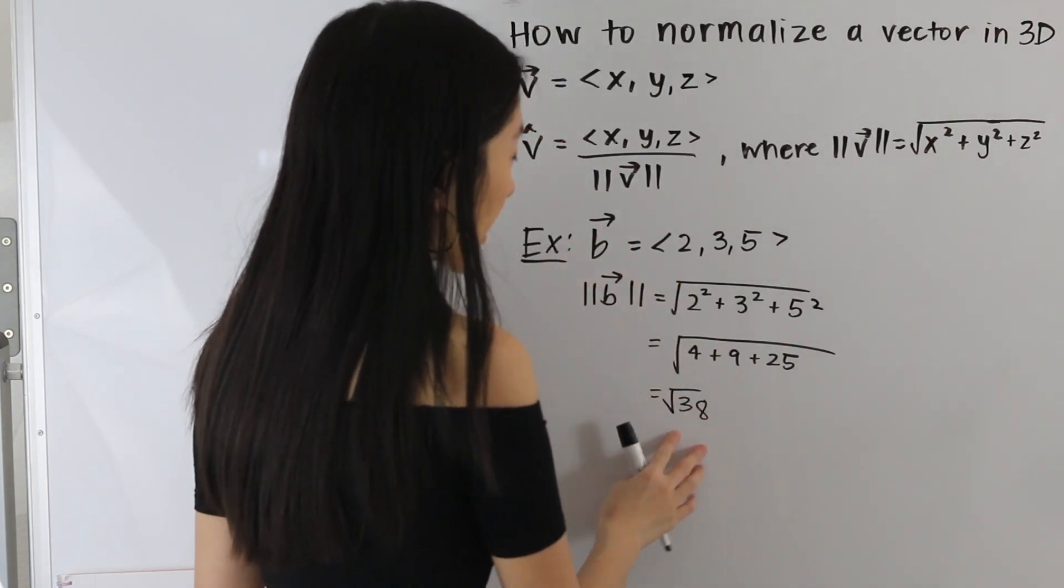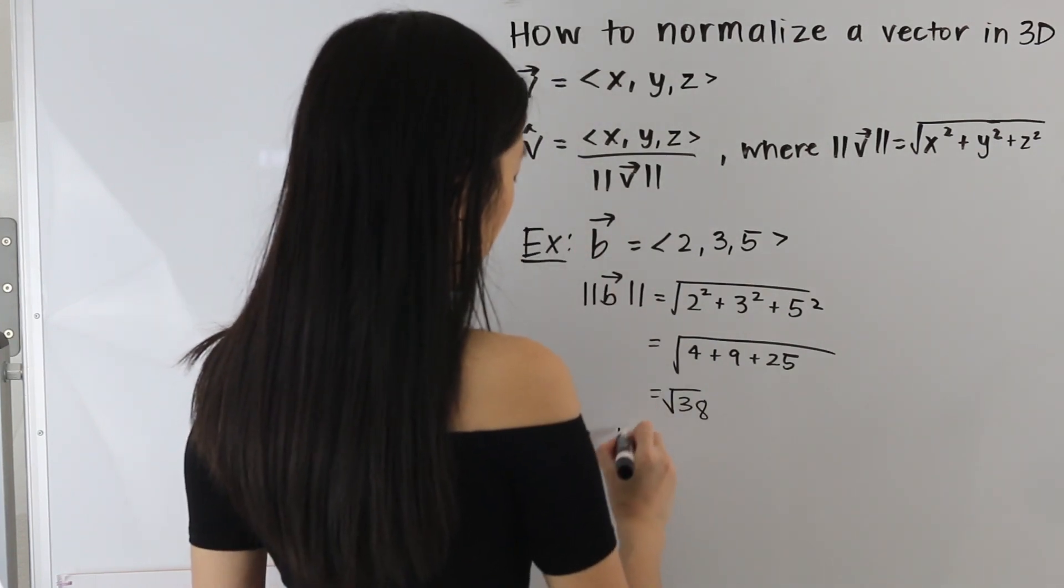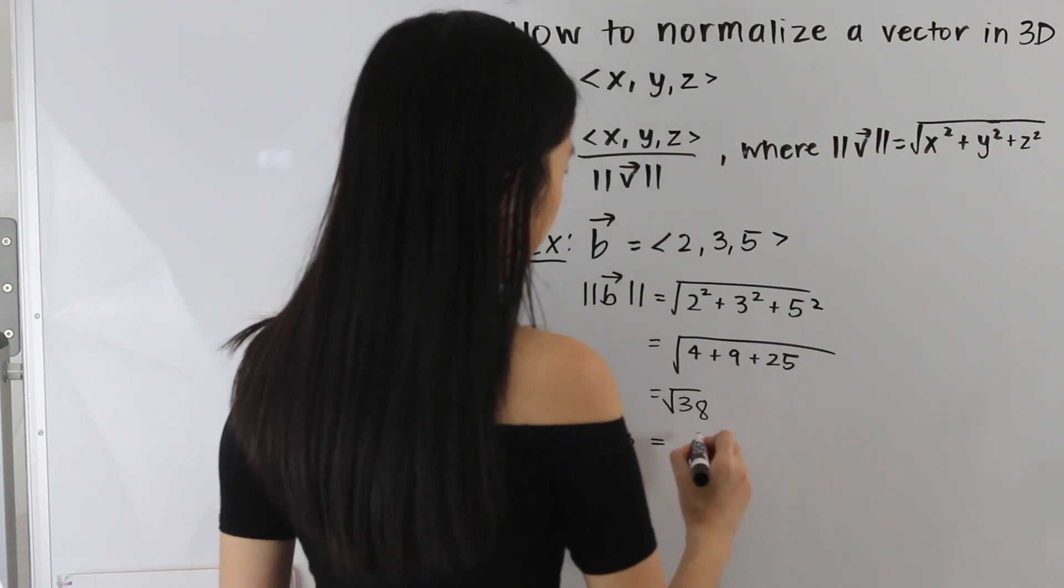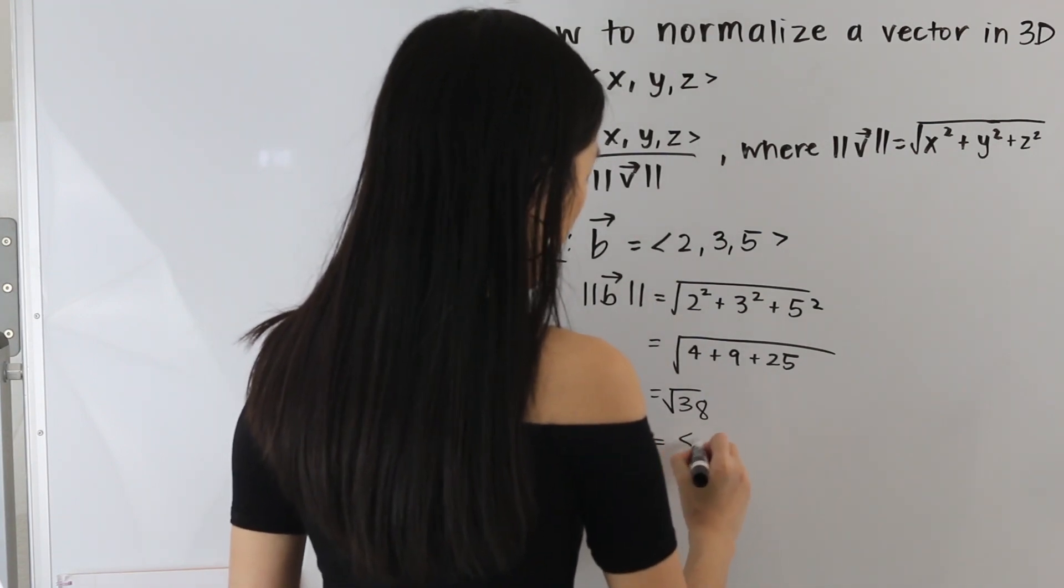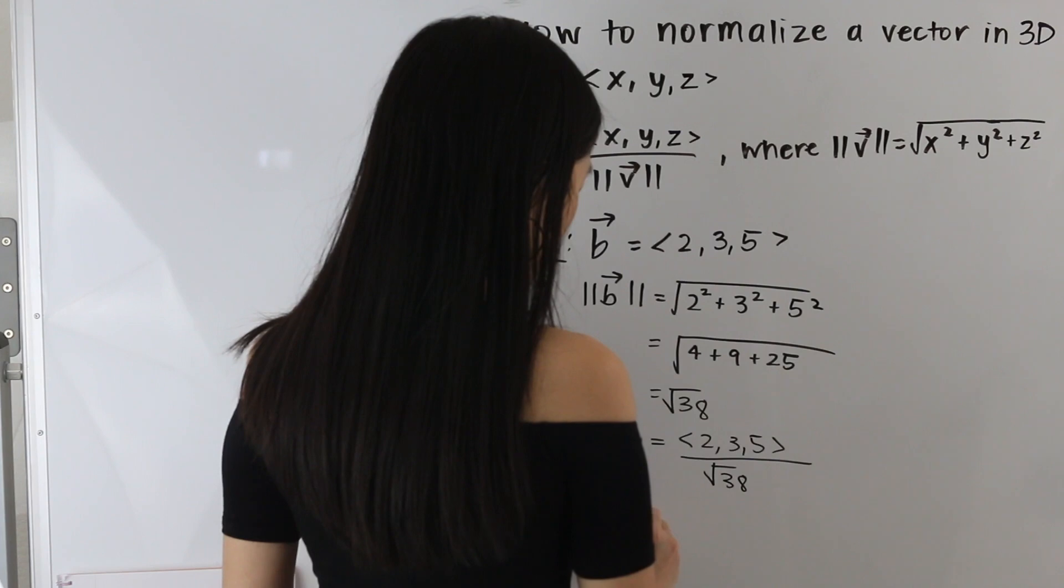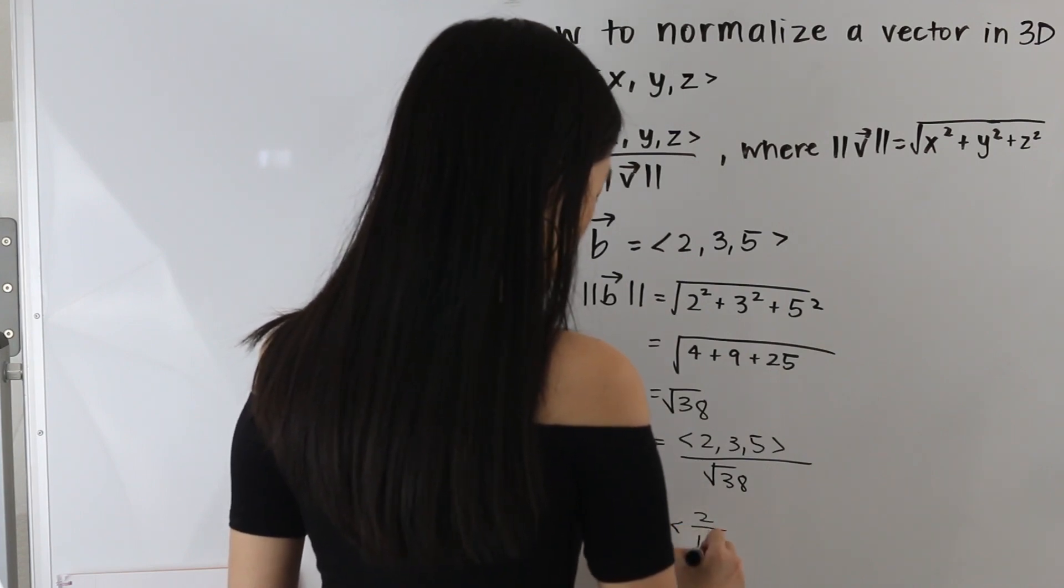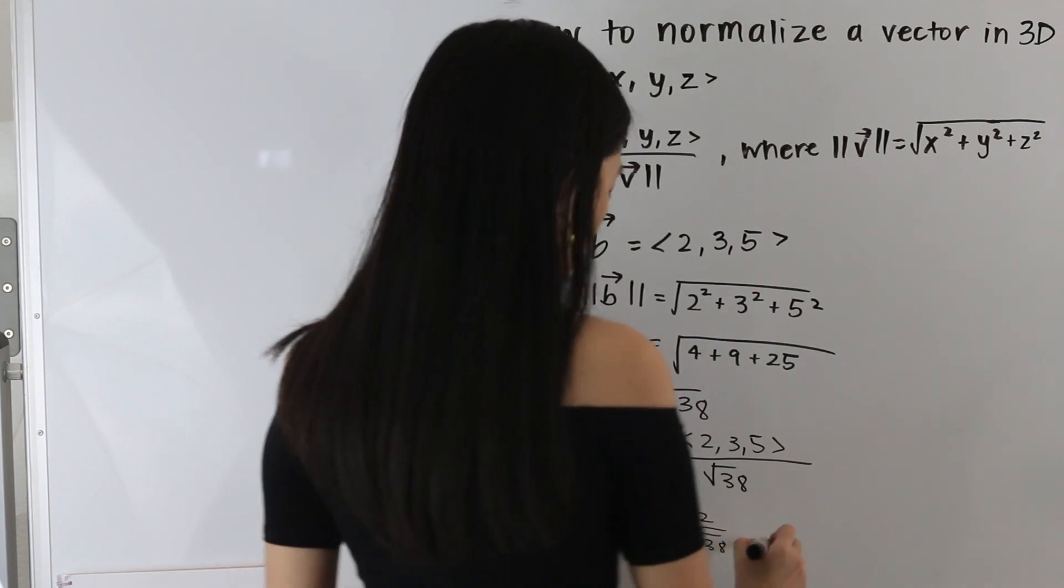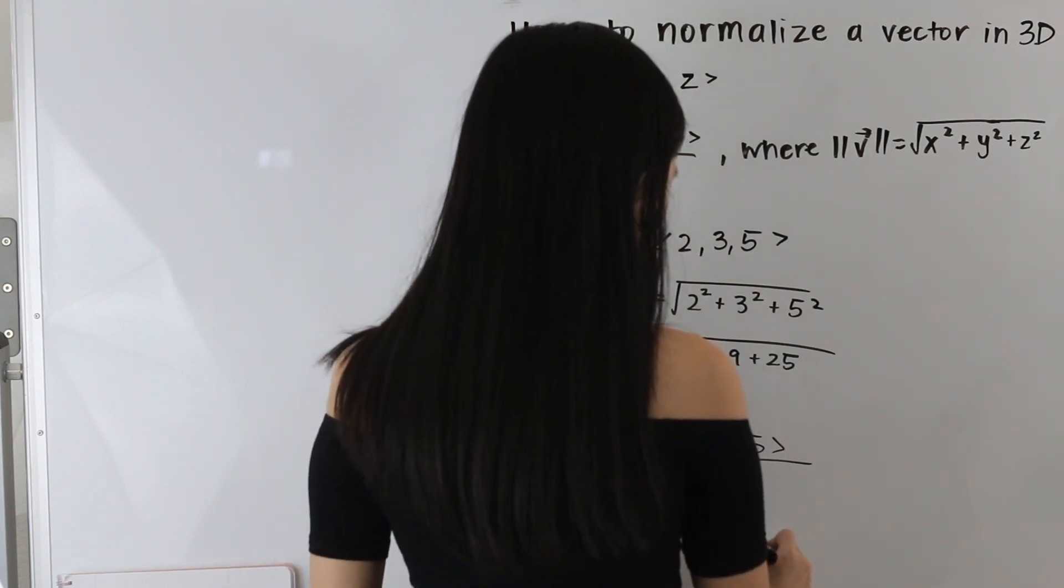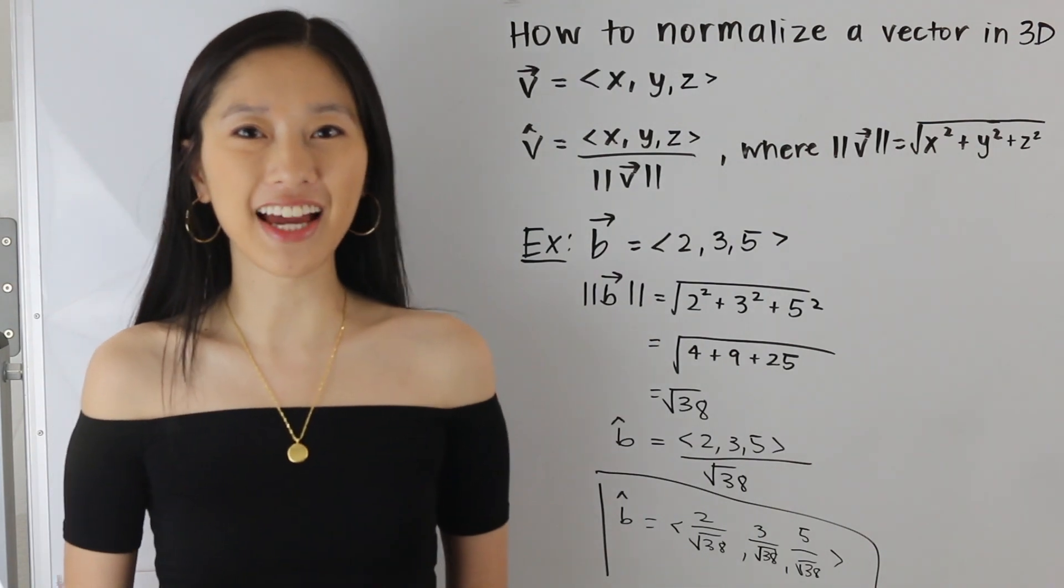So let's go ahead and plug in our vector and its magnitude into our formula here. So we are going to get the unit vector v is equal to 2, 3, 5 divided by the square root of 38. And we can rewrite this as follows. So 2 over the square root of 38, 3 over the square root of 38, and 5 over the square root of 38. And that is our final answer.